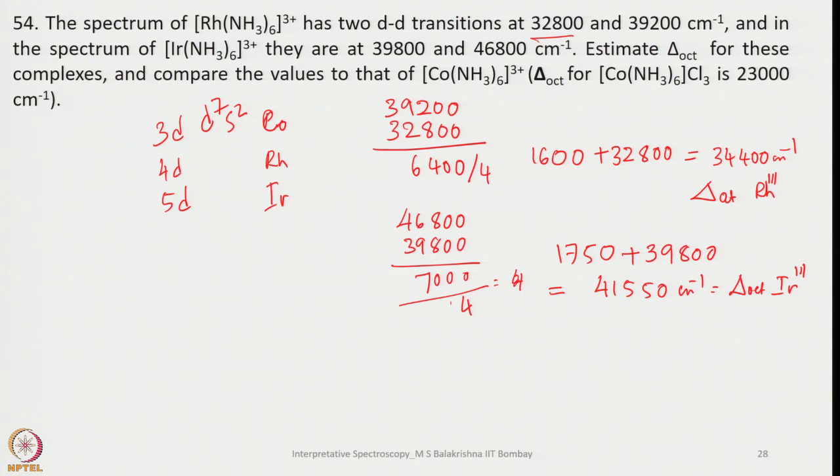If we compare cobalt value of 23000, rhodium is 34400, and iridium is 41550 cm^-1. This nicely explains when we go from 3D to 4D to 5D: the crystal field splitting energy increases. Why? As we go down, higher orbitals are there, the orbitals become larger in size. When they are larger in size, there is greater difference between the extent of interaction of the T2g and Eg orbitals, and increase in the energy between T2g and Eg is possible. As a result, delta increases down the group.